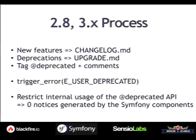We realized that adding all those notices after the fact — for deprecations since 2.3, across versions 2.4, 2.5, 2.6, 2.7 — was a nightmare. So for Symfony 2.8 and any 3.x version, whenever we add a new feature we will also add the @deprecated tag right away, so we don't have to do it two or three years later. We also add a trigger notice in the code where appropriate, and we enforce zero notices in Symfony itself and its components.